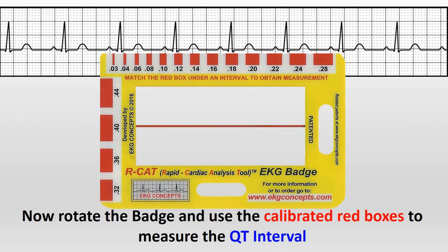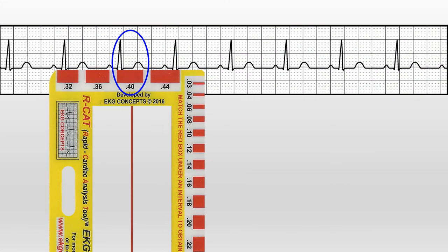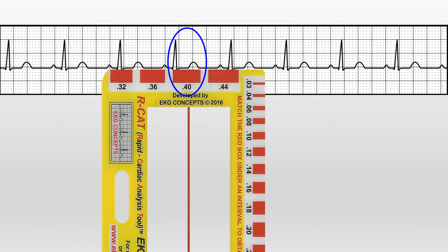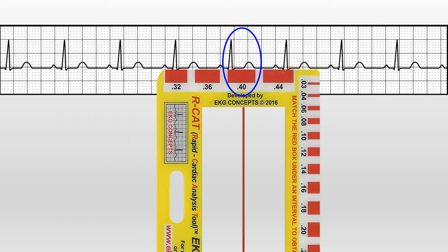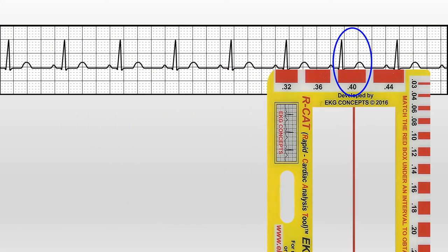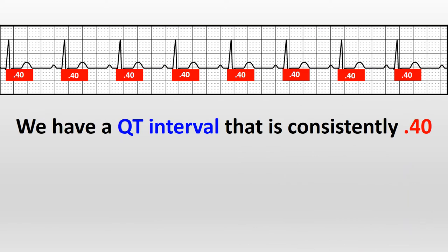Now rotate the badge and use the calibrated red boxes to measure the QT interval. We have a QT interval that's consistently 0.40.